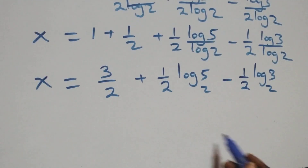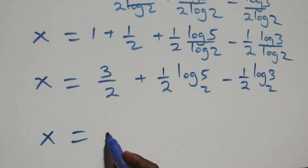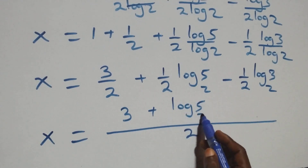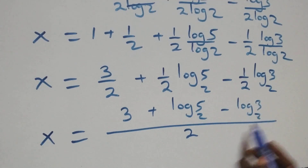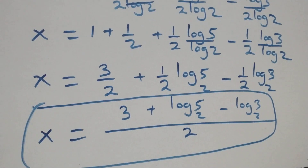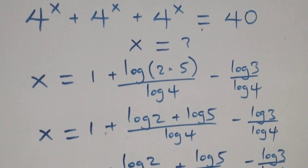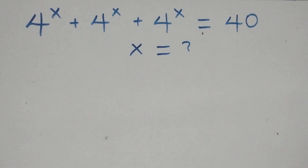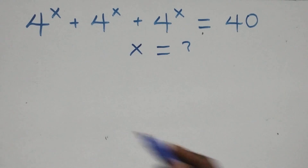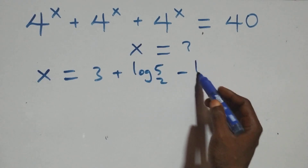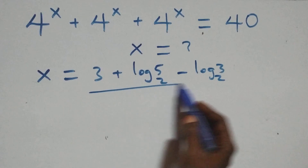We bring this together as one fraction. The denominator is 2, and we have x equals three halves plus one half log₂5 minus one half log₂3, which gives x equals 3 plus log₂5 minus log₂3, all over 2. Let's check that this satisfies the given problem. We substitute x equals (3 plus log₂5 minus log₂3) over 2.